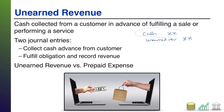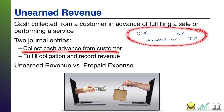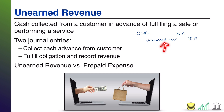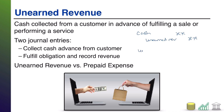There are two journal entries typically involved with an unearned revenue transaction. First, you collect a cash advance from a customer: you receive cash and record a liability because you still owe them a product or service. The second journal entry is when you fulfill the job — perform the service or deliver the product. At that point you remove the liability because you no longer owe that service, and because you've performed the job you get to recognize service revenue.